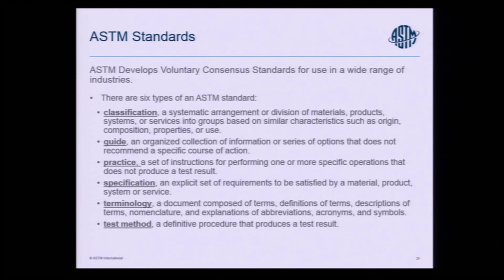You'll see ASTM standards everywhere — safety is a primary concern, and standards facilitate trade. In the ASTM world, there are six different types of standards, all of equal value: classifications, guides, practices, specifications, terminology standards, and test methods. Probably the most far-reaching standards that ASTM has are the test methods. ASTM test methods are recognized internationally because they have a precision and bias section that shows how accurate they are to be used, and that separates ASTM from many other standards development organizations in the world.